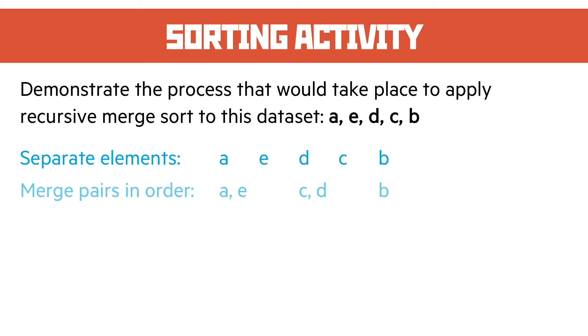Then you merge the pairs so we end up with AE and CD. Then you merge them again, pair them up and merge them again, so we end up with A, C, D, E and B. Then we merge them again and we get the actual final correct order.